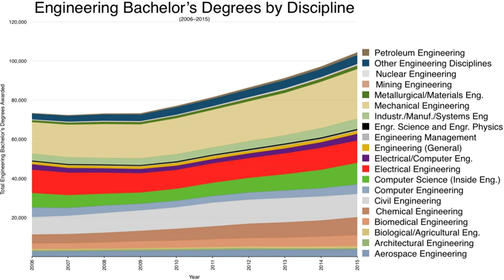In Austria, similar to Germany, an engineering degree can be obtained from either universities or Fachhochschulen. As in most of Europe, the education usually consists of a three-year bachelor's degree and a two-year master's degree. A lower engineering degree is offered by Höheren Technisch Lehranstalten (HTL), Higher Technical Institutes, a form of secondary college which runs from grade 9 to 13, with disciplines like civil engineering, electronics, information technology, and others.